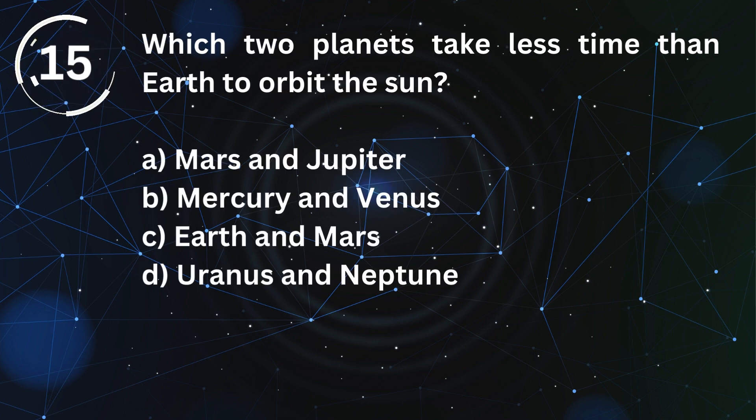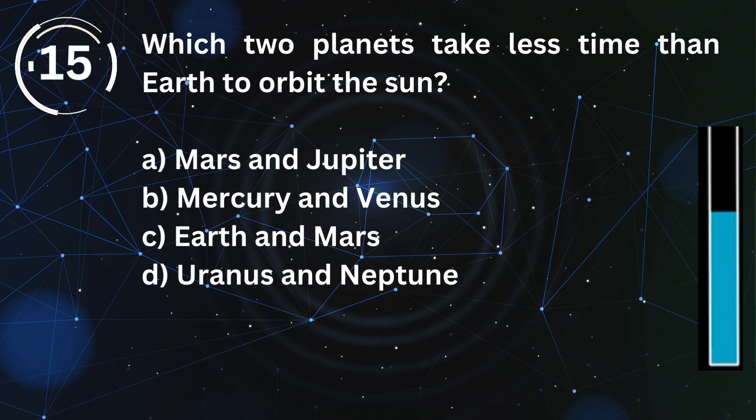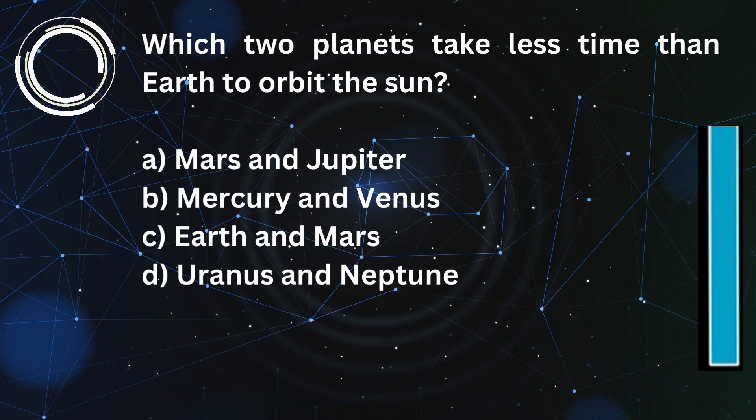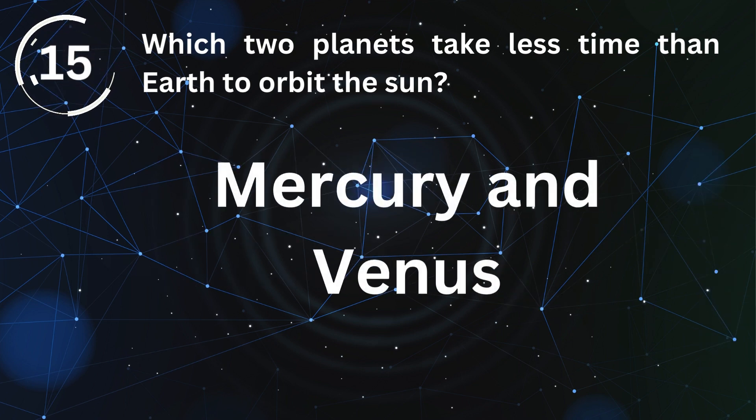Which two planets take less time than Earth to orbit the Sun? Mercury and Venus.